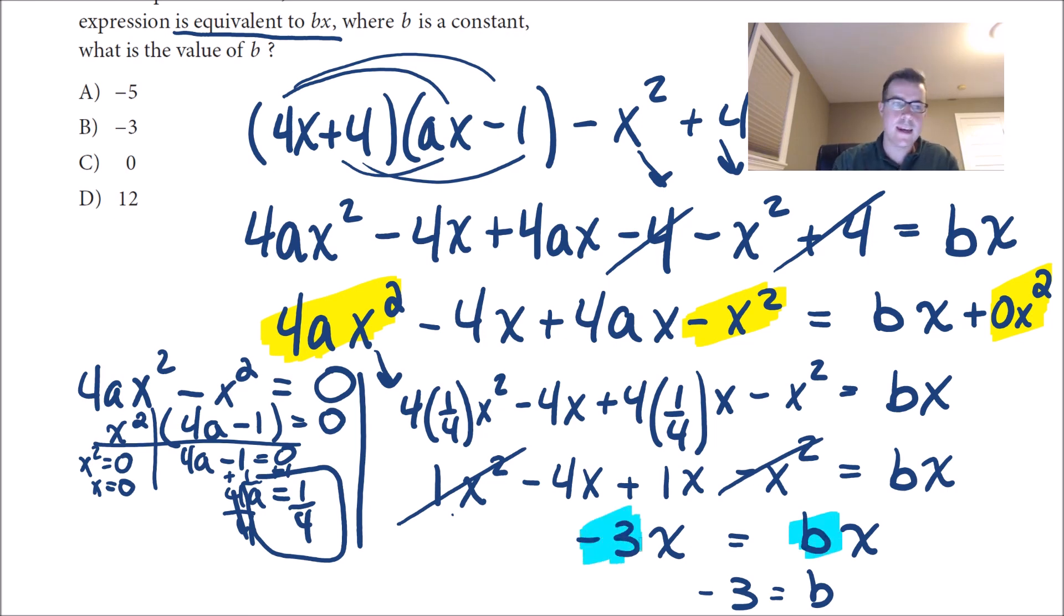So b is negative three, and that would be choice B. Alright, if you have any other questions or requests for a certain question that you want to see please comment them below.